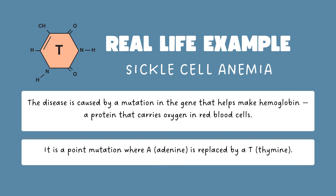As a real-life example, take sickle cell anemia. This disease is caused by a mutation in the gene that helps make hemoglobin, a protein that carries oxygen in red blood cells. It is a point mutation where A, adenine, is replaced by a T, that is thymine.